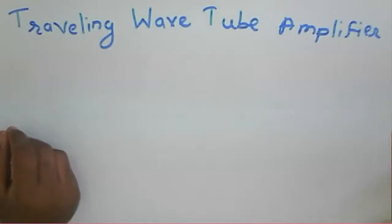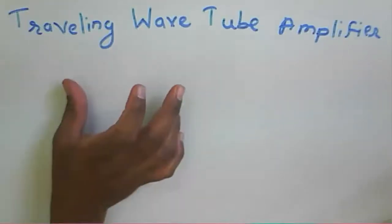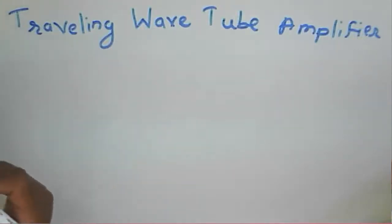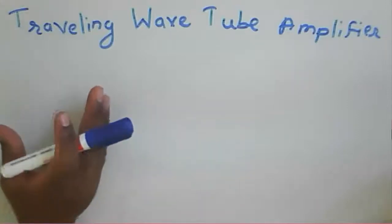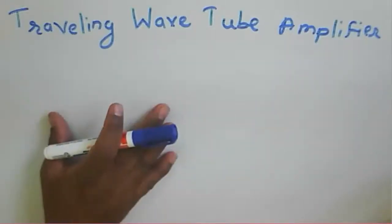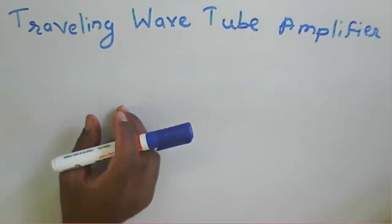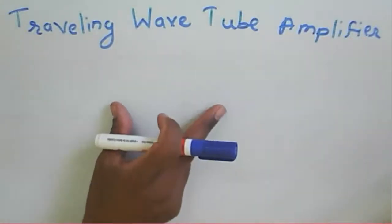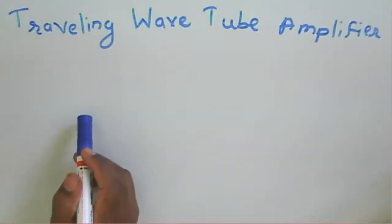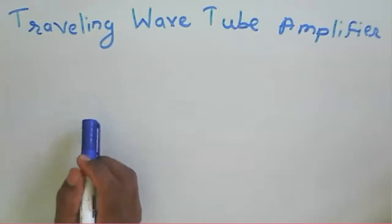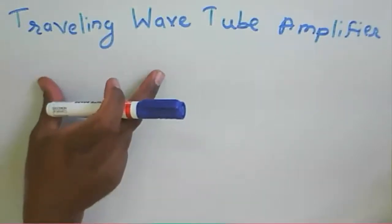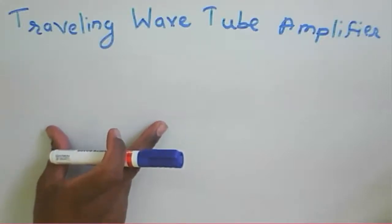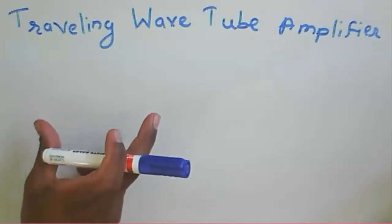Welcome to the micro communication course. Today we talk about the traveling wave tube amplifier. In a traveling wave tube amplifier, the interaction between the beam and the RF field is continuous. The electric field and magnetic field are both on the axis. That's why this tube is called a linear tube. This traveling wave tube is used as an amplifier, similar to the two-cavity klystron and multi-cavity klystron.